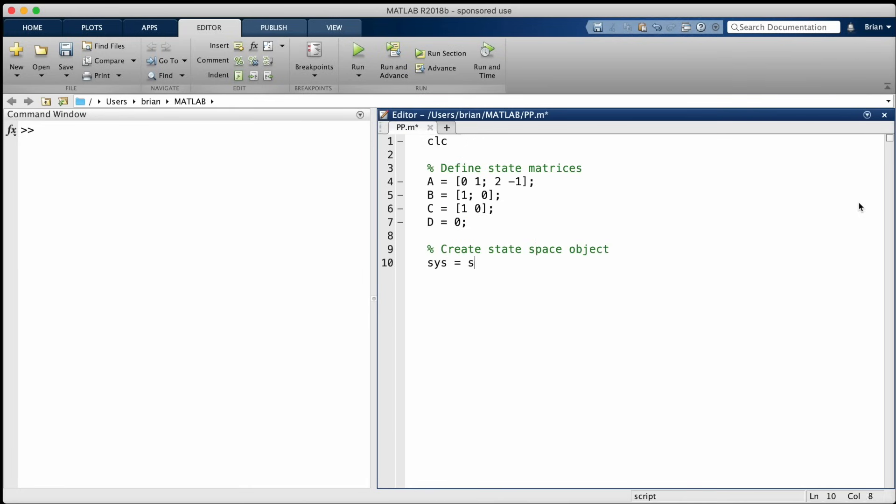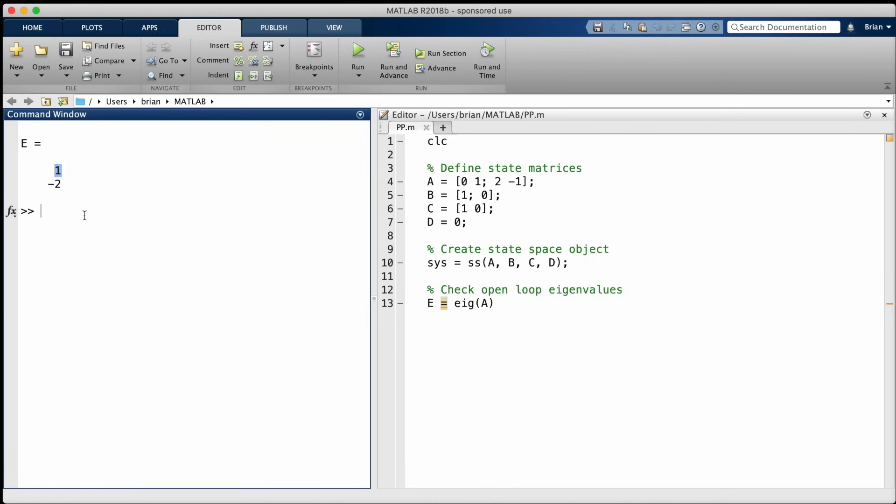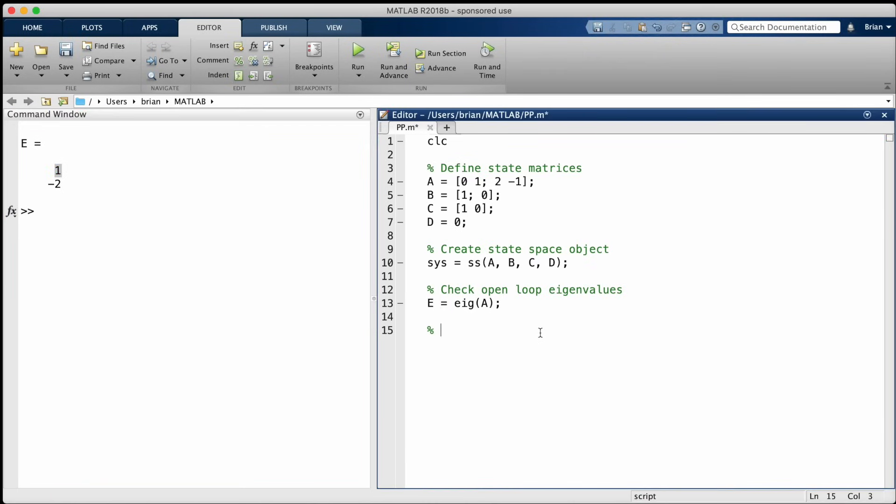I'll define the four matrices, and then create the open loop state space object. I can check the eigenvalues of the open loop A matrix, just to show you that there is in fact that positive eigenvalue that causes the system to be unstable. And that's no good, so let's move the eigenvalues of the system to minus 2 and minus 1. Now solving for the gain matrix using pole placement can be done with the place command. And we get gain values of 2 and 1 just like we expected.